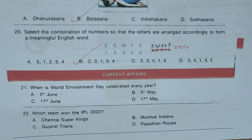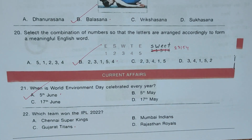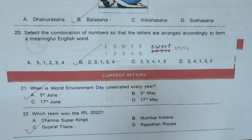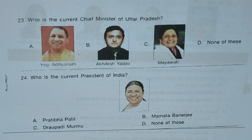Current Affairs section. Question 21: When is World Environment Day celebrated every year? A) 5th June, B) 5th May, C) 17th June, D) 17th May. Correct answer is A) 5th June. Question 22: Which team won IPL 2022? A) Chennai Super Kings, B) Mumbai Indians, C) Gujarat Titans, D) Rajasthan Royals. Answer is C) Gujarat Titans.